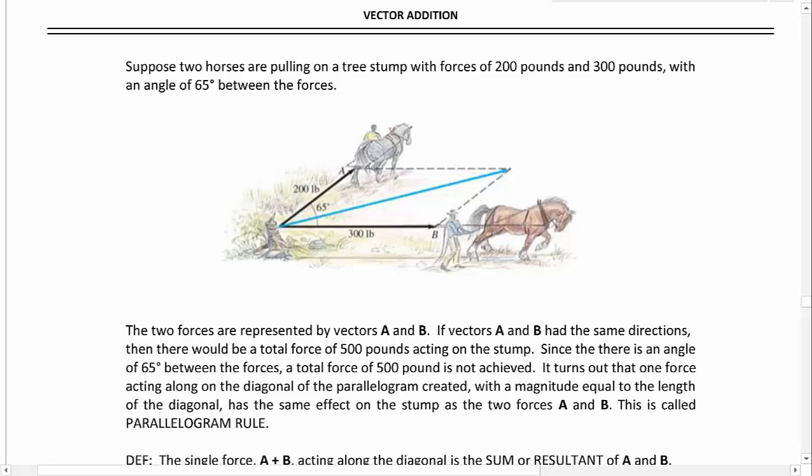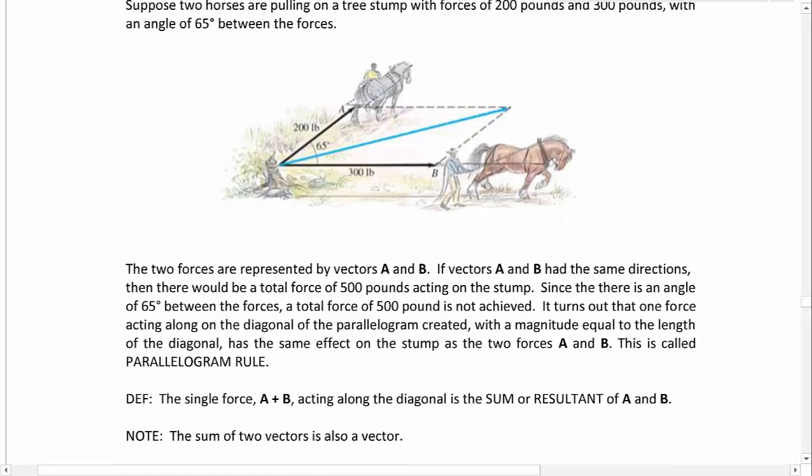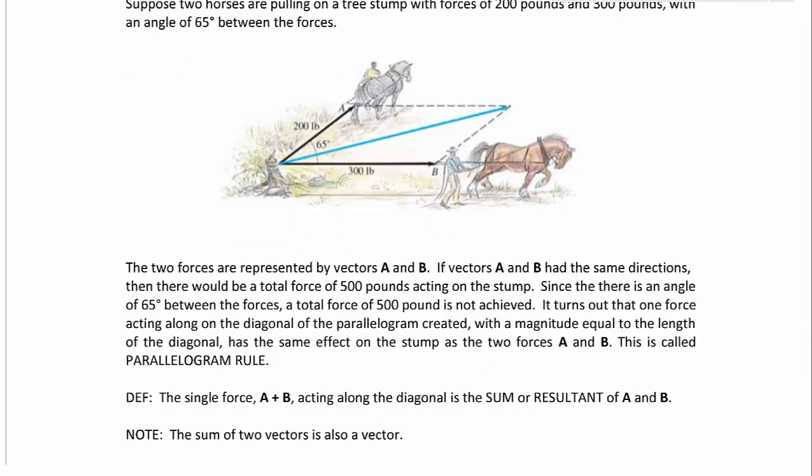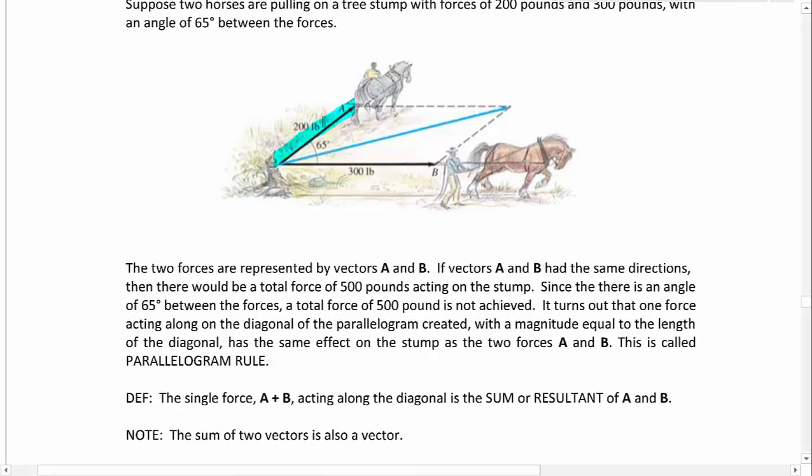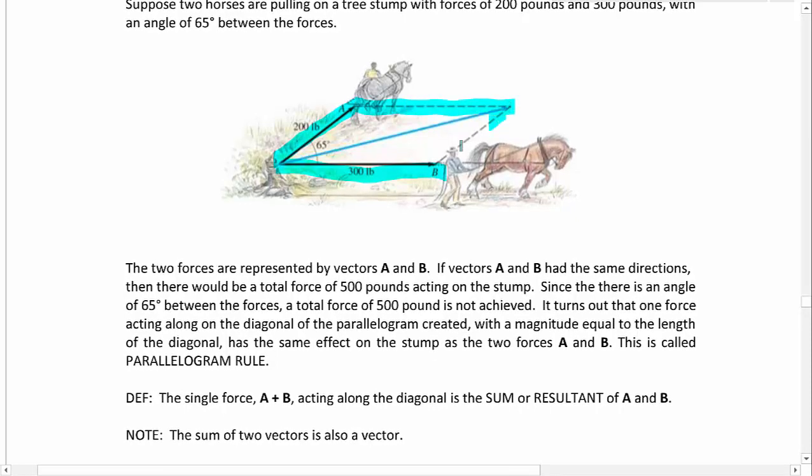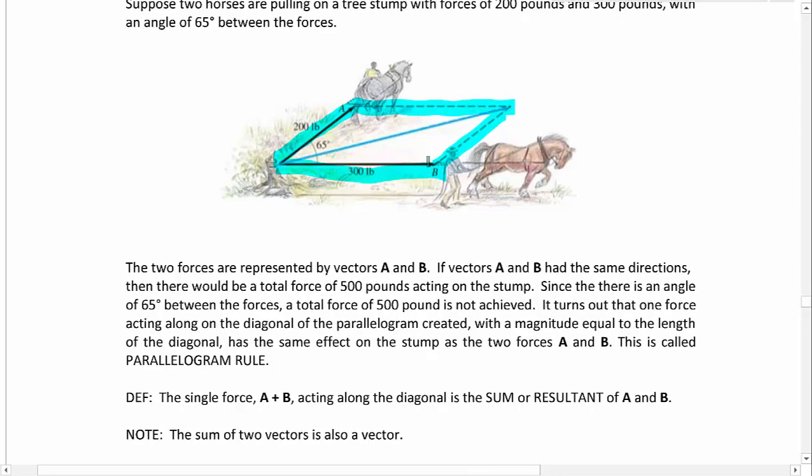It turns out that one force acting along the diagonal of the parallelogram created. So you see here, we've got our two original vectors, and we can create a parallelogram here. Remember that a parallelogram is a quadrilateral with two pairs of parallel congruent sides. So it's almost like just a rectangle that's been pushed over.